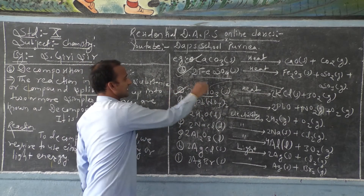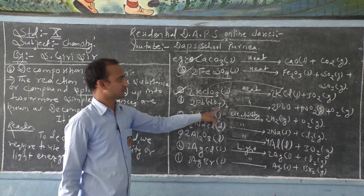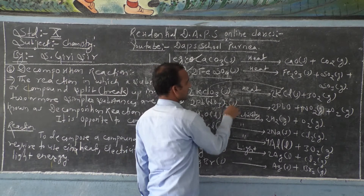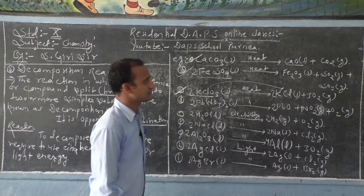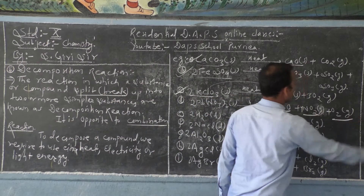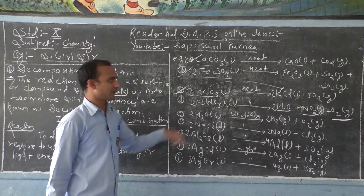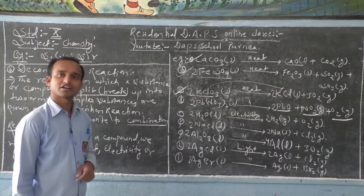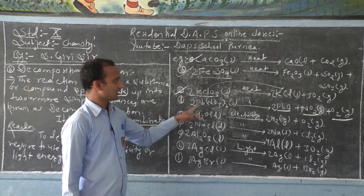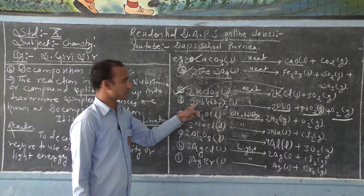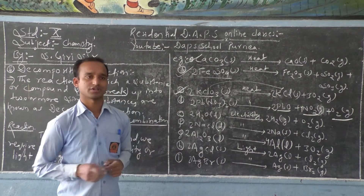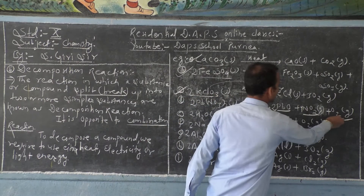Number D: when you take lead nitrate and heat it, it breaks into lead oxide, nitrogen dioxide, and oxygen gas. Lead nitrate is one substance and it splits into three different constituents: lead oxide, nitrogen dioxide, and oxygen.